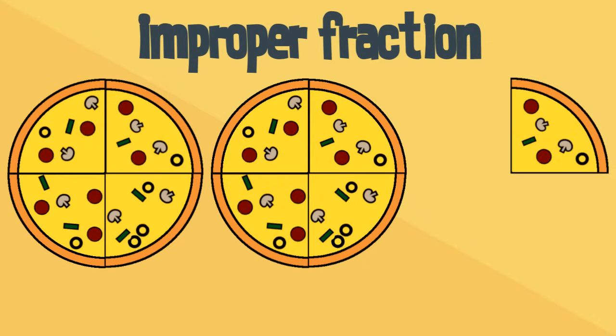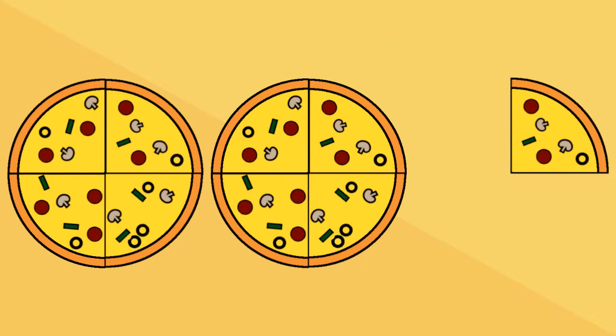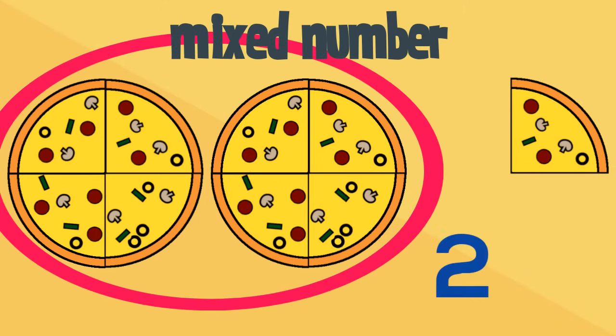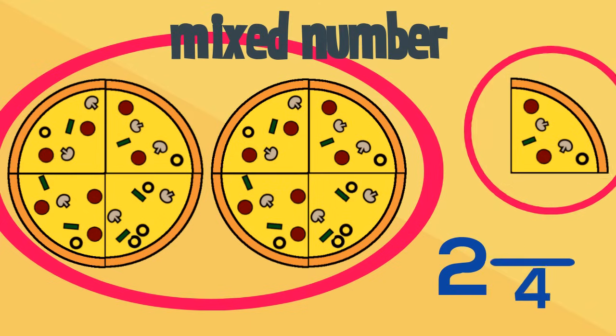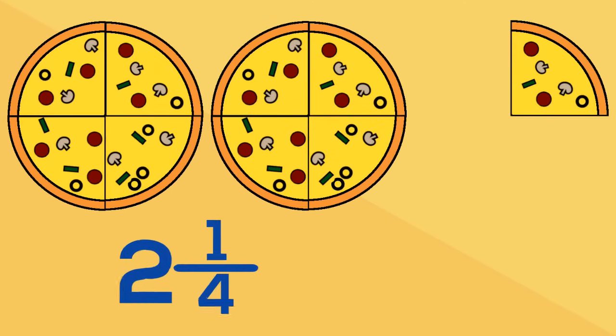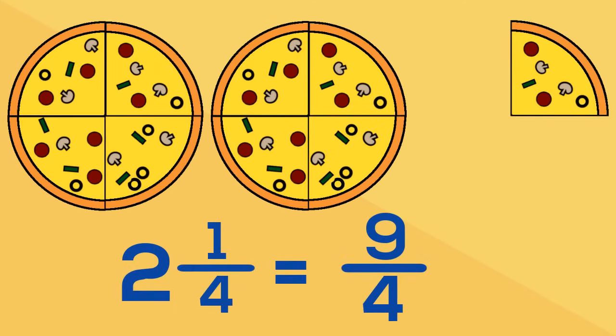Let's think about how we could write this as a mixed number. How many wholes are there? Two. How many extra quarters are there left? One. The mixed number is two and one quarter. Two and one quarter is the same as nine quarters.